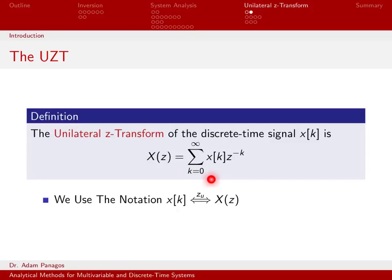And if we want to be very clear, we can use this notation down here. Instead of saying x of k goes into the z-domain, if we want to be very clear that we're using the unilateral Z-transform, instead of putting a z above the double arrow, sometimes we might put a z sub u to imply that we're using the unilateral Z-transform. So that is the definition of the unilateral Z-transform.